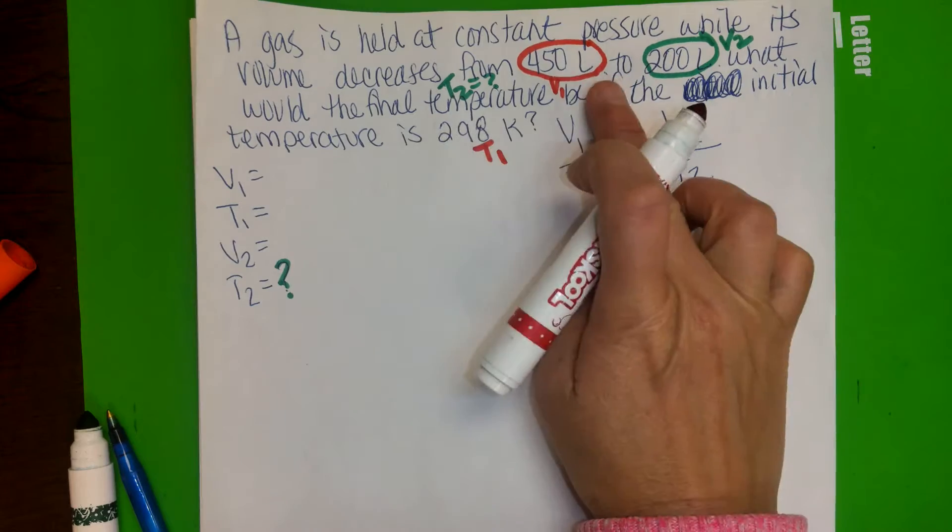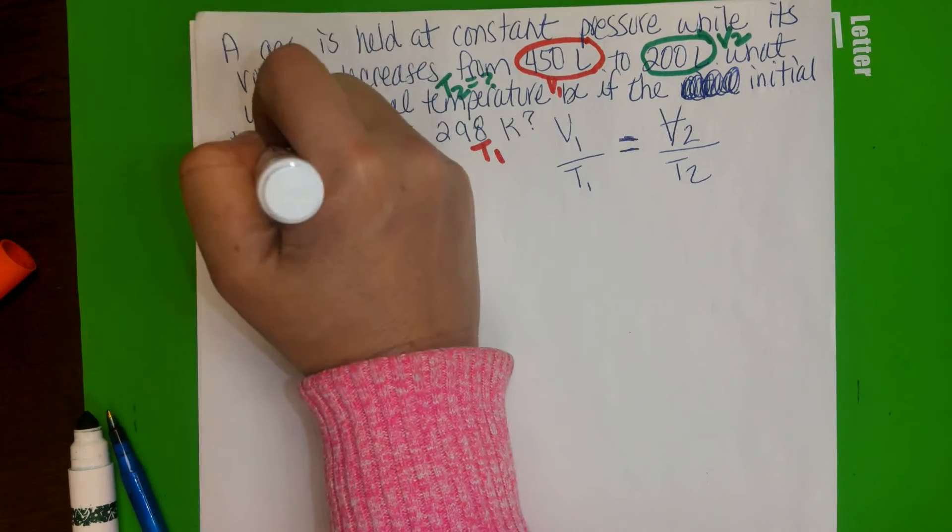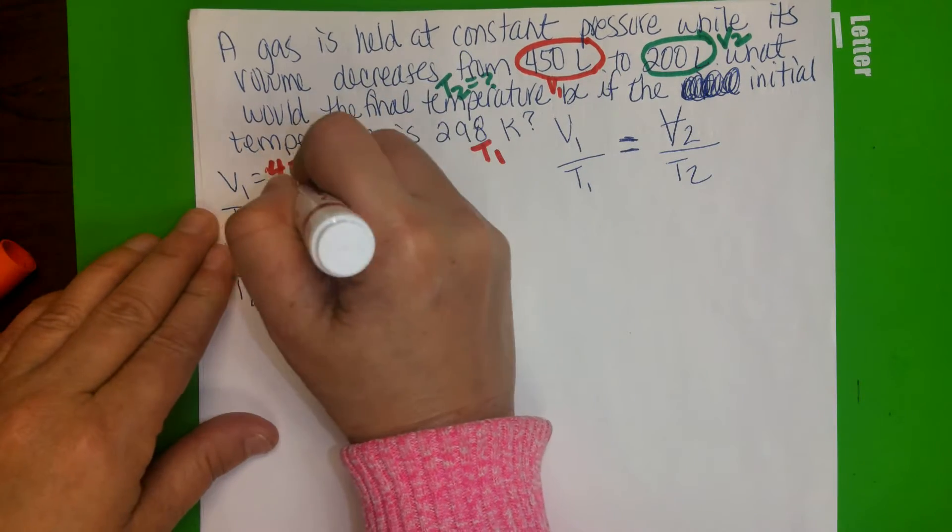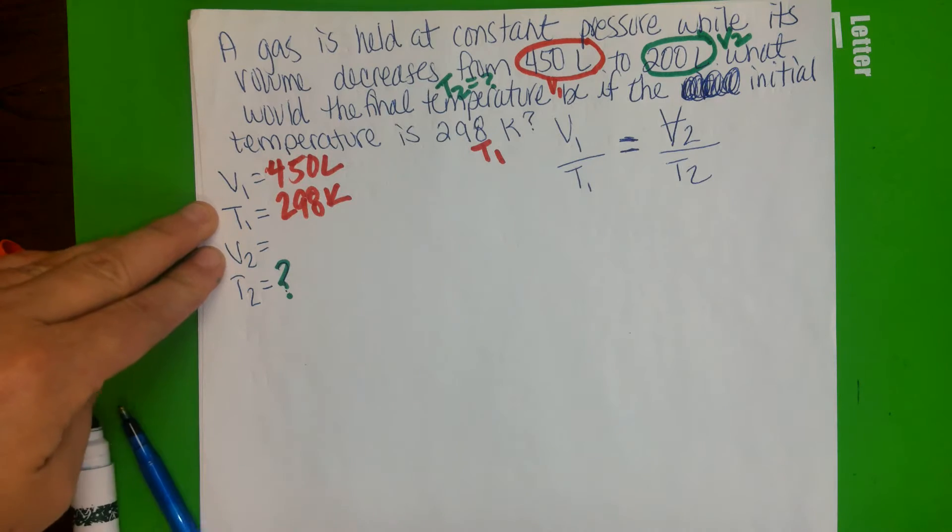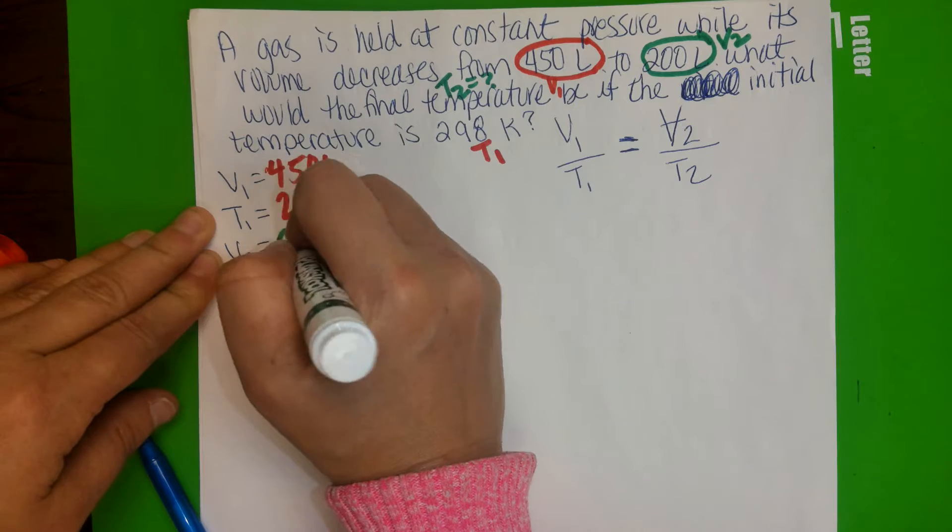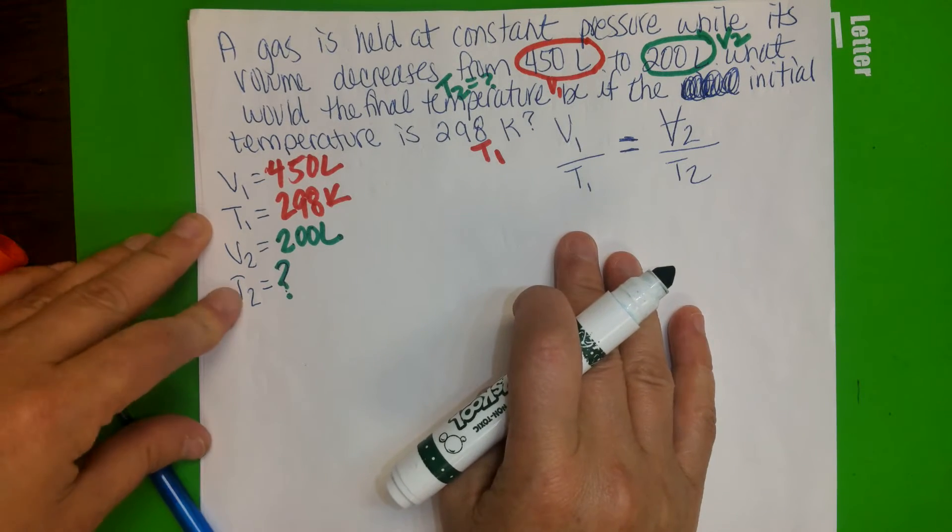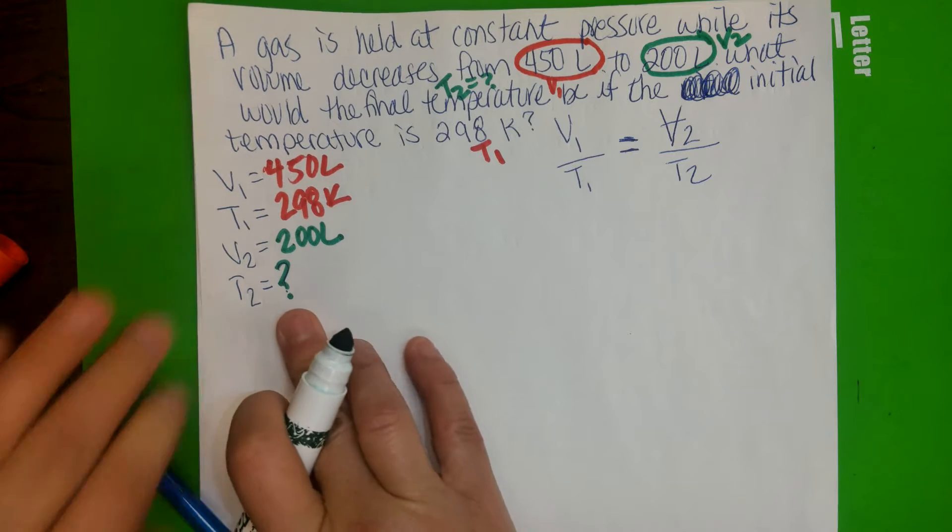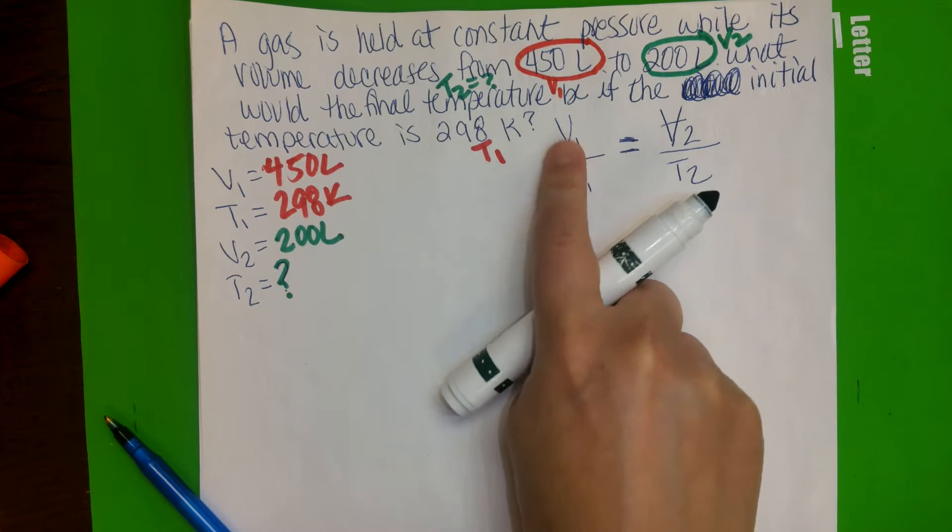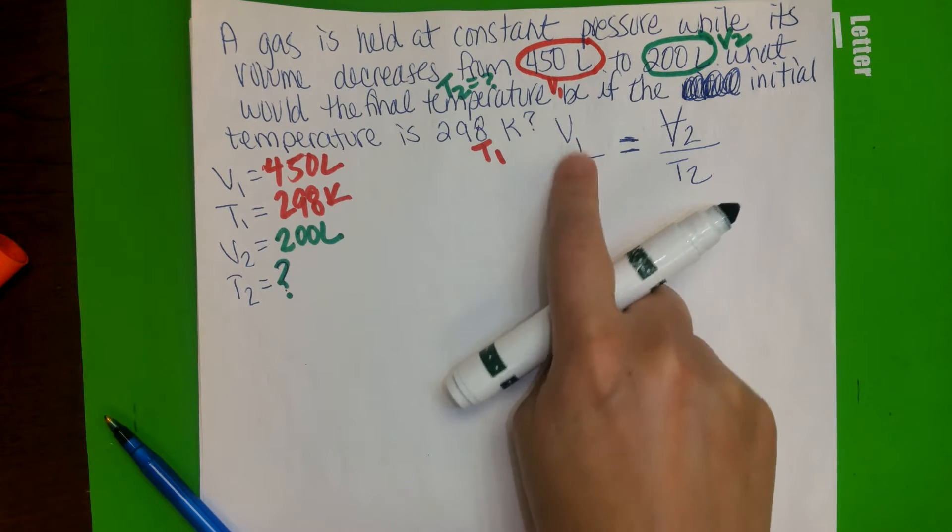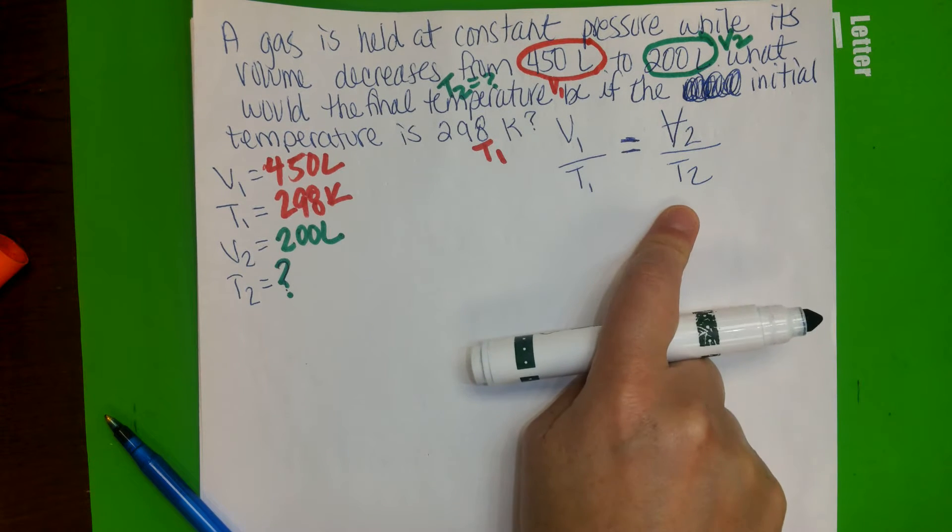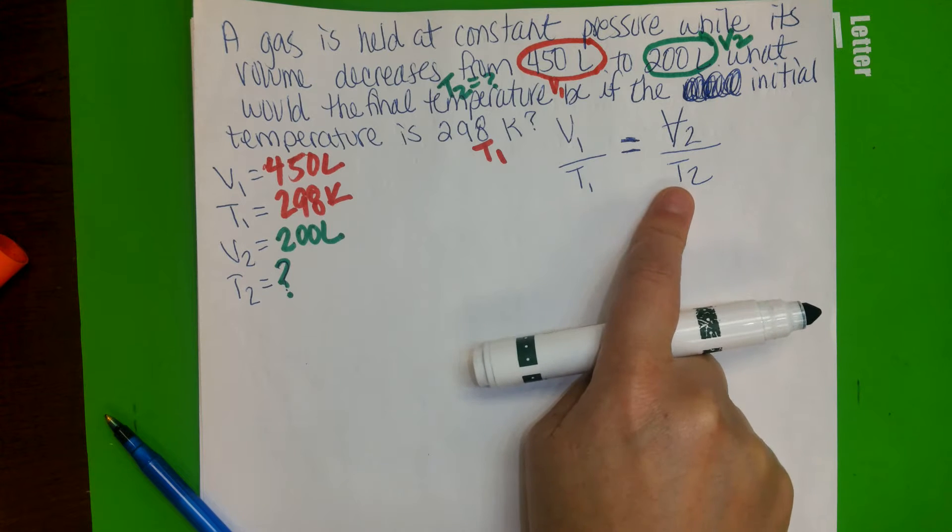Let's go ahead and start by putting in the initial volume, 450 liters. The initial temperature is 298 Kelvin. And then your second volume would be 200 liters. The temperature 2 is the one we're trying to solve. The initial volume, the V1s and T1s, you have to divide that, and that should equal to the final volume, which is your V2, divided by T2.